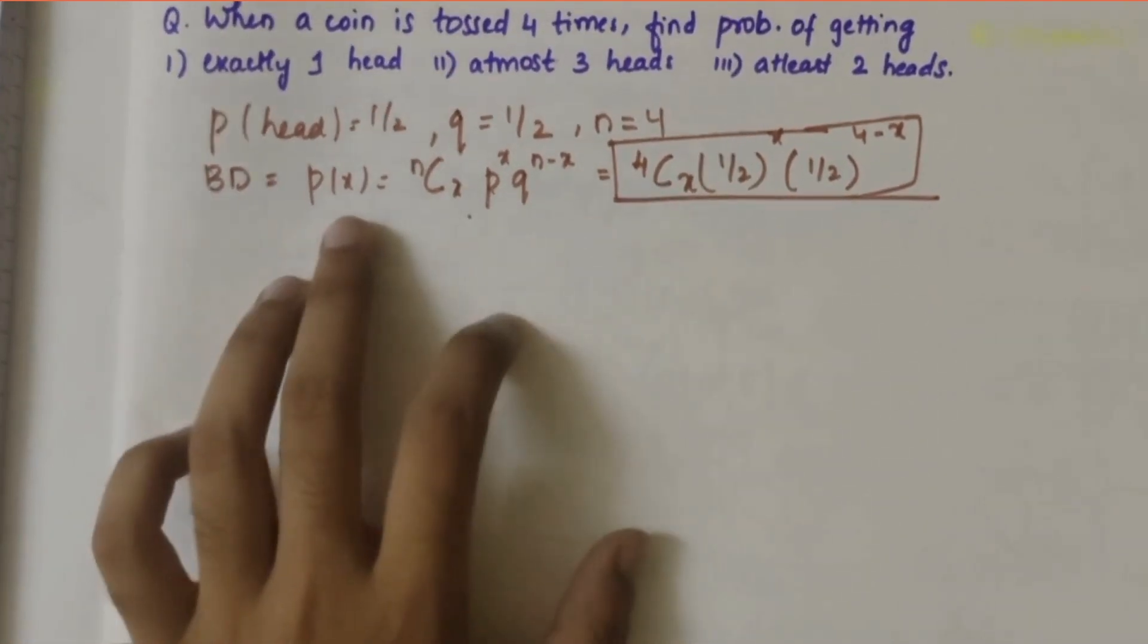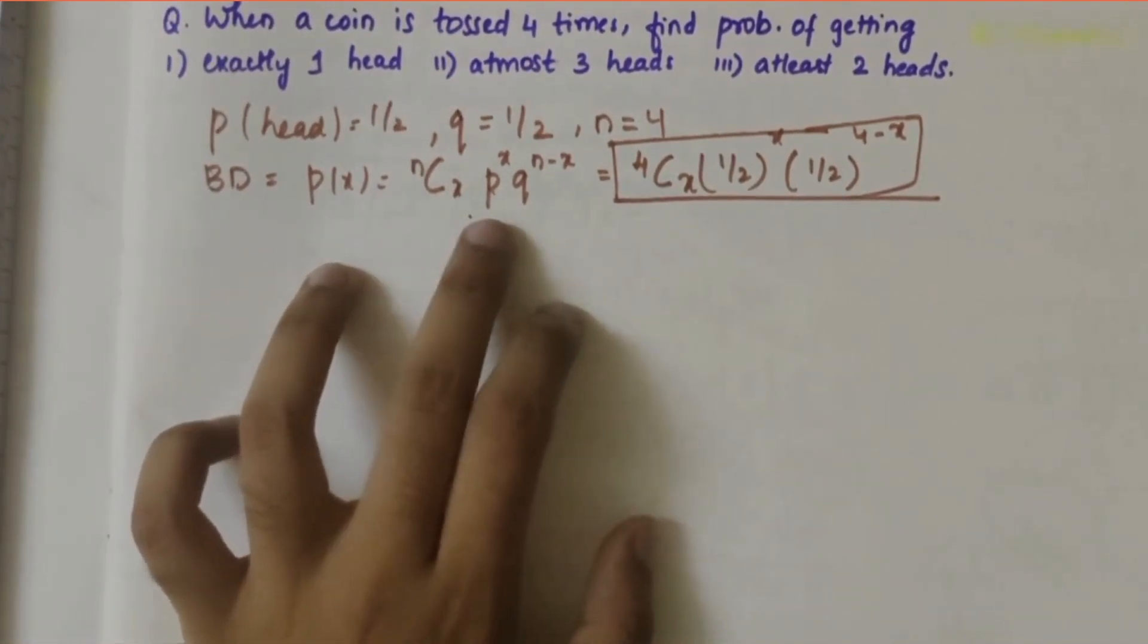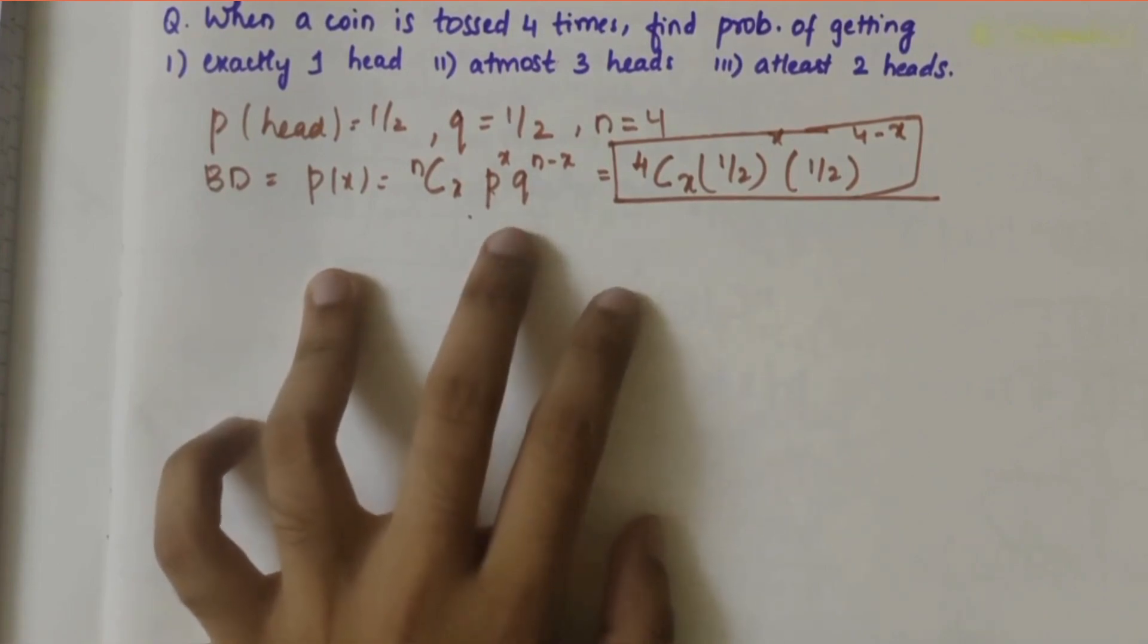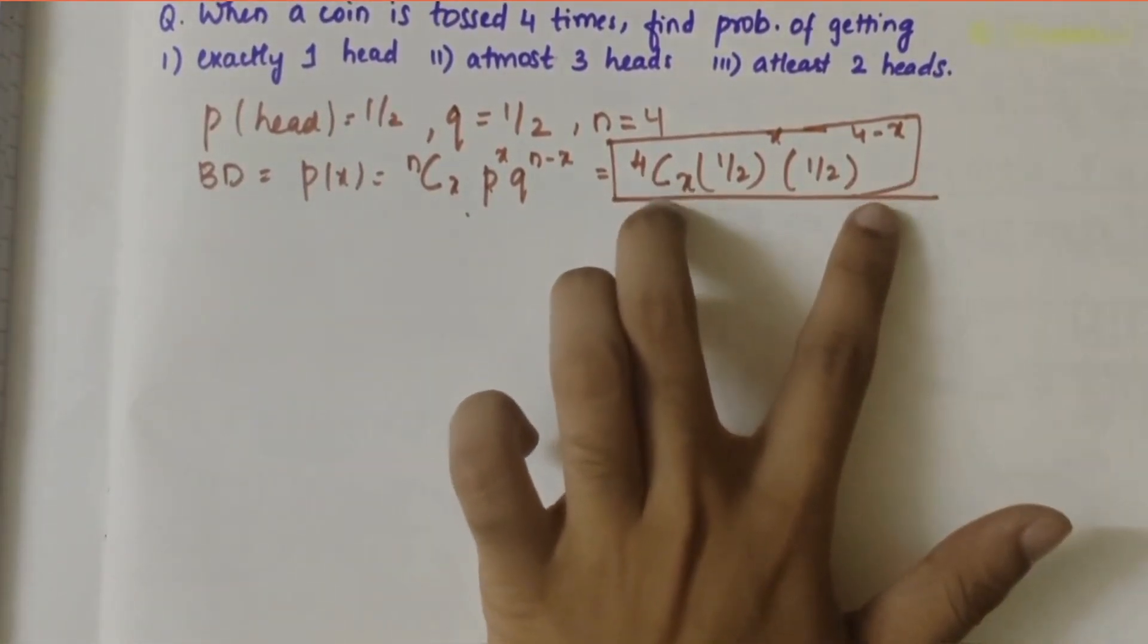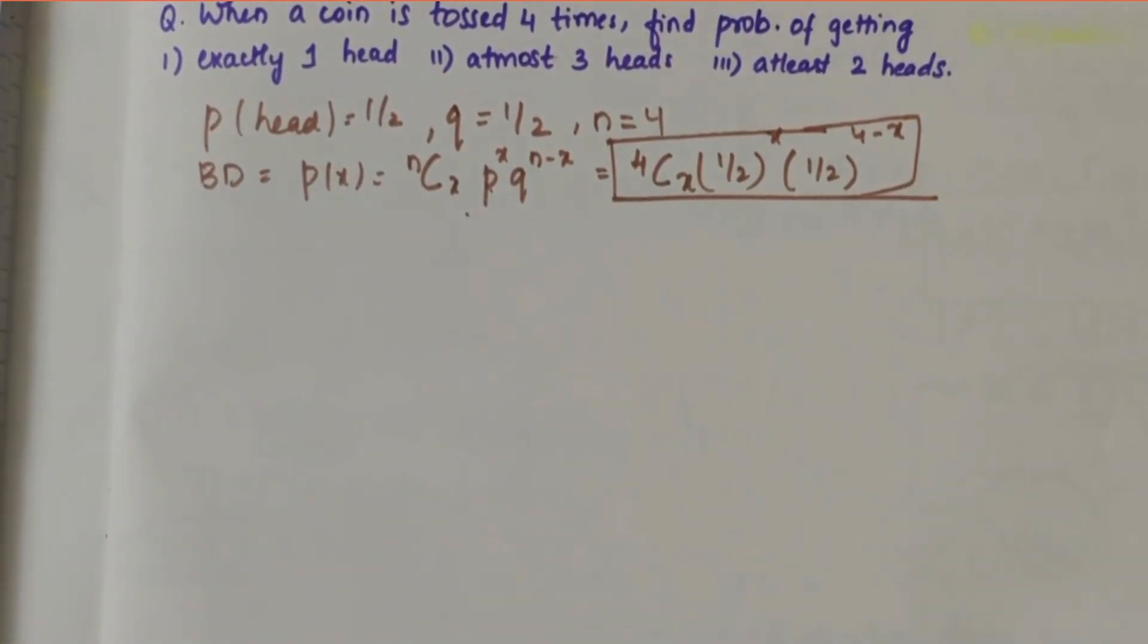By binomial distribution, P(X) = nCx × p^x × q^(n-x). Now substituting the values of p, q, and n, we get the general equation. We'll use this general equation as reference to solve the subparts.